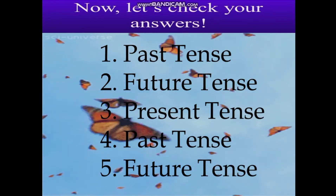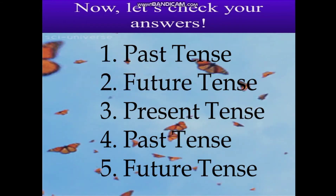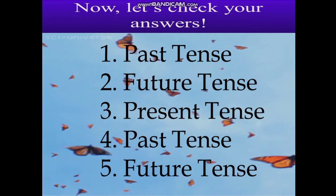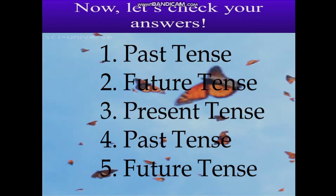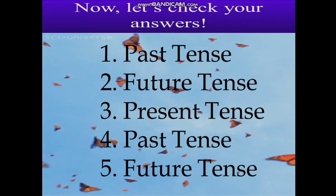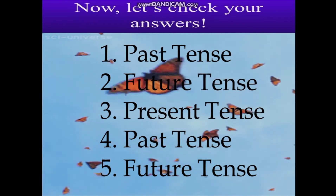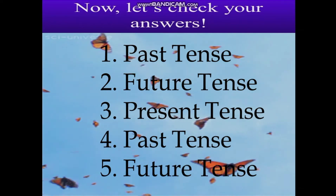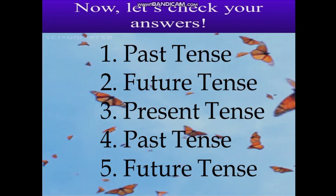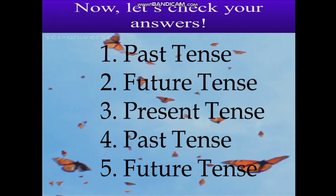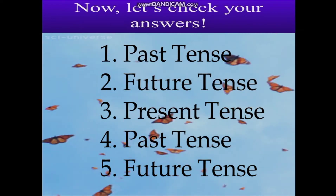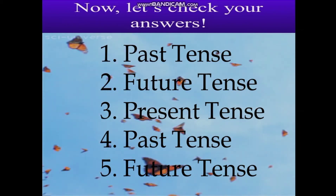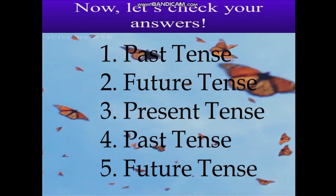Now, let us check your answers. Number 1: Past tense. Number 2: Future tense. Number 3: Present tense. Number 4: Past tense. Number 5: Future tense. Very good! You are already familiar about the tenses of the verb. Again, the tenses of the verbs are past tense, present tense, and future tense.